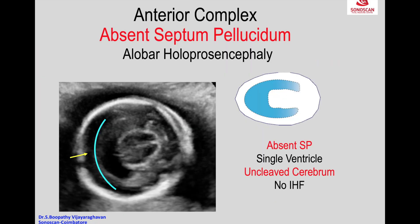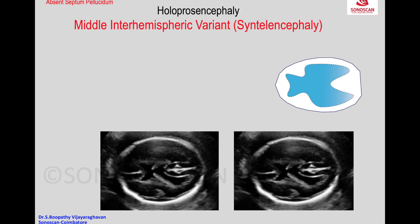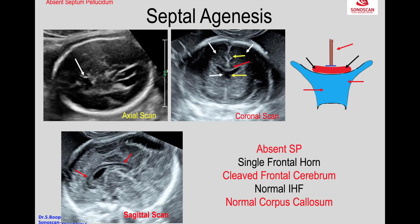Once you see this scan around 30 weeks, the sulci, gyri, and fissures, as well as the thalamus, may also be unclear. These are the features of a lobar posterior cerebrum.